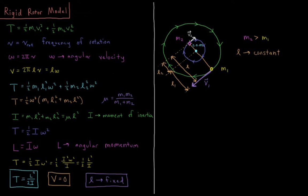We've got two atoms connected by some covalent bond. The bond length is what I'm going to refer to as L, and that's going to be some constant distance — that's the rigid part. This bond is going to be rotating; this diatomic molecule will be rotating around whatever center of mass it has, and that is the rotor part.